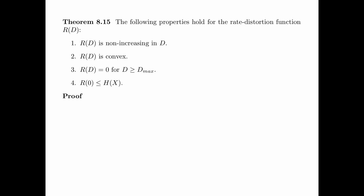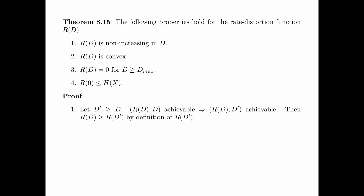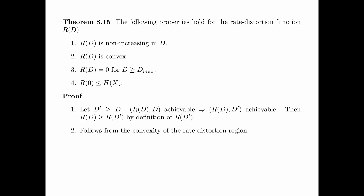The proof goes as follows. For property 1, let D' be greater than or equal to D. Then (R, D) achievable implies (R, D') is also achievable. We have R(D) greater than or equal to R(D') by definition of R(D'). Therefore, for D' greater than or equal to D, R(D) is greater than or equal to R(D'), and hence R(D) is non-increasing in D. The second property, namely that R(D) is convex, follows from the convexity of the rate-distortion region that we have already proved.